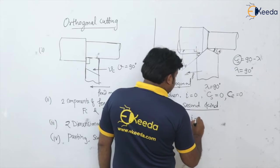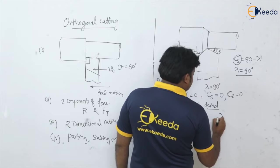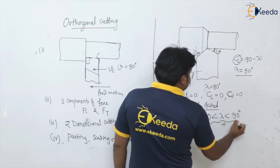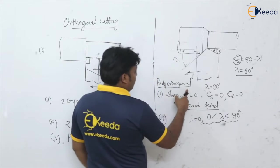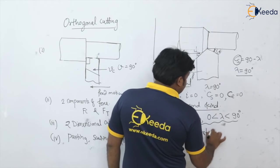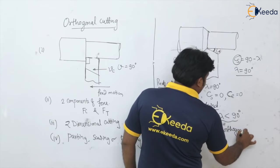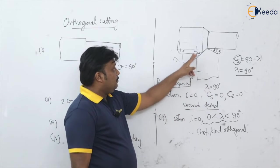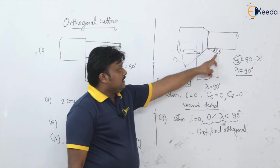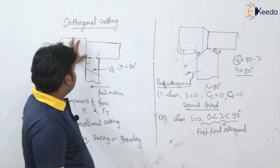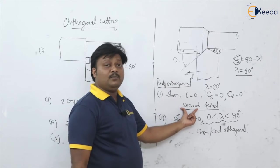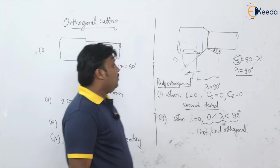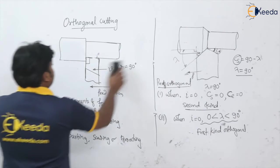When i equals 0 and lambda is greater than 0 but less than 90 degrees, this condition is known as the pure orthogonal condition of the first kind. So to summarize: when i equals 0, lambda equals 90 degrees (CS equals 0, CE equals 0), it is the pure orthogonal of the second kind. When i equals 0 and lambda is between 0 and 90 degrees, it is the first kind orthogonal.